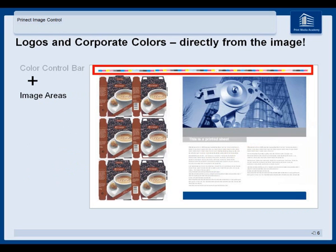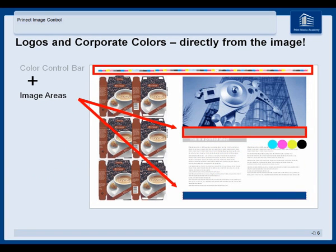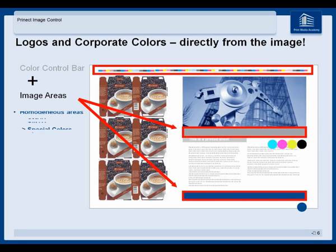One example of image regulation is image areas. Use image areas of CMYK or special colors and add them to your regulation — this leads to better image stability in print production.